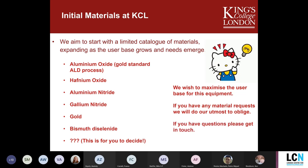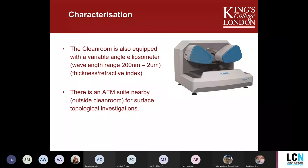As part of the Strand Research Facility, we also have a variable angle ellipsometer available, working in a wavelength range from 200 nanometers to approximately 2 micrometres. This allows you to obtain thickness and refractive index from films deposited using PALD, check for inhomogeneities, and check uniformity across a wafer. You can also extract the refractive index to get hints about impurities. This can be used before and after deposition. There is also an AFM suite nearby for surface topological investigations of your substrates before and after deposition.